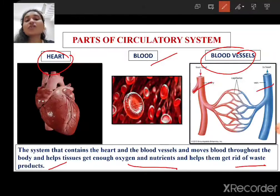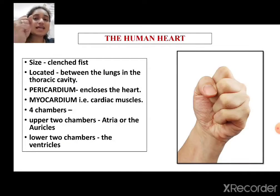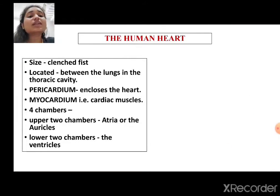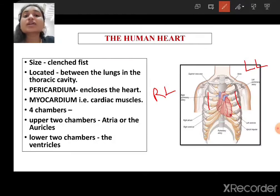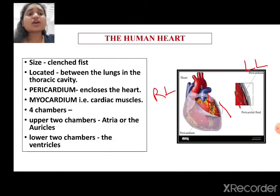Now we are going to focus on the heart. The human heart is originated from the mesoderm. Its size is that of a clenched fist — so my heart is of this size, and your heart will be of your clenched fist. It is located between the lungs in the thoracic cavity, with the right lung on one side and the left lung on the other, and the heart is slightly tilted towards the left side.